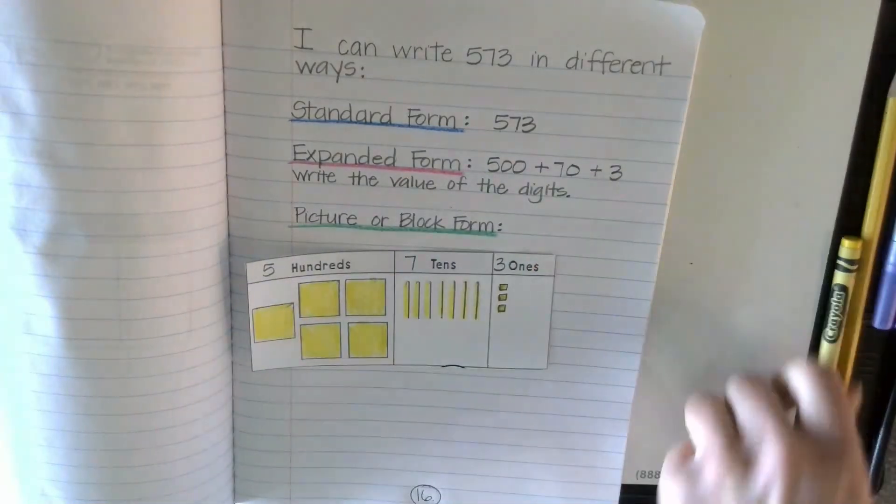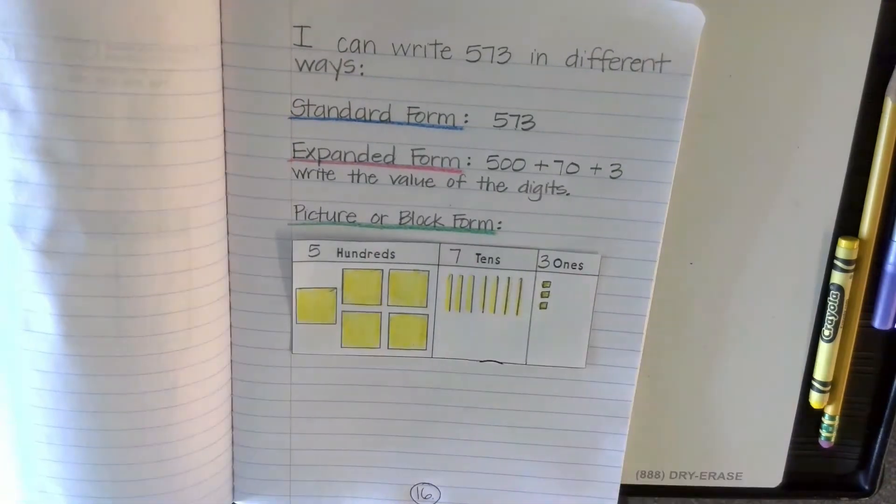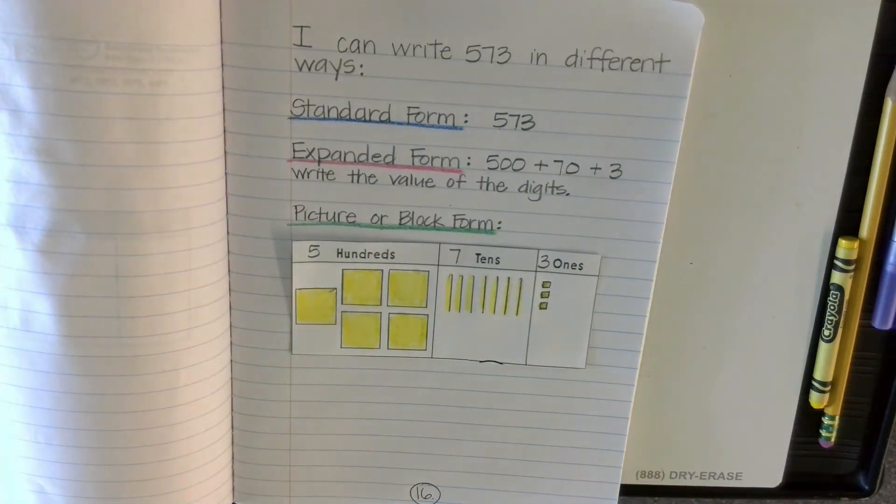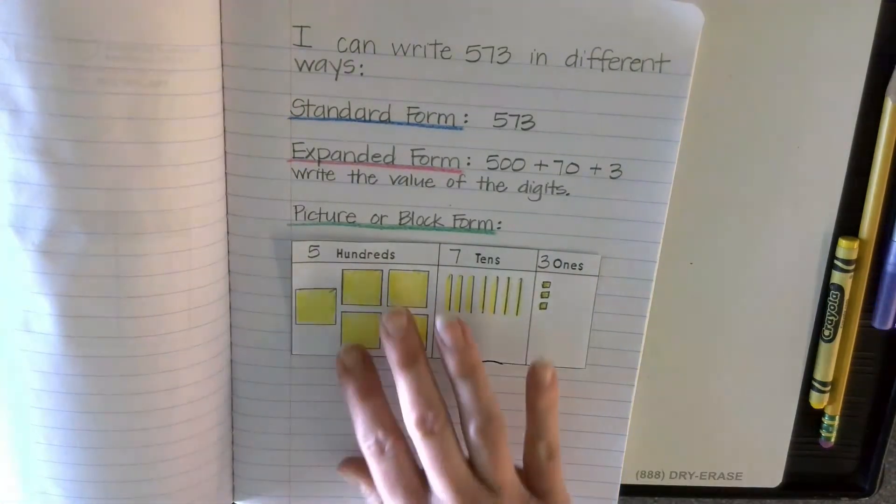Now maybe I'll just trace over my tens with yellow and color in my little ones. And there I have 573 in picture or block form.